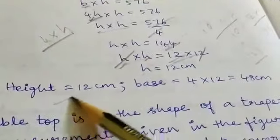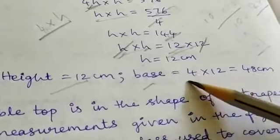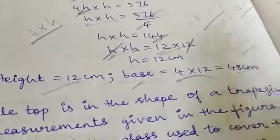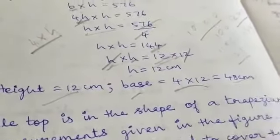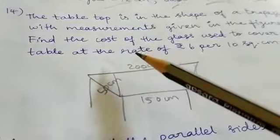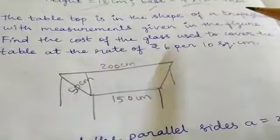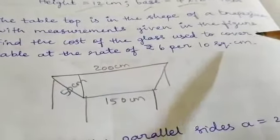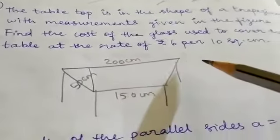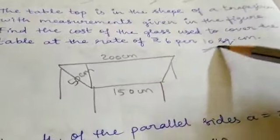So height is 12 centimeters. How much is the base? Base equals 4H, that's 4 into 12 which is 48 centimeters. Next one: Table top is in the shape of a trapezium with measurements given in the figure. Find the cost of the glass used to cover the table at the rate of Rs. 6 per 10 square centimeters.